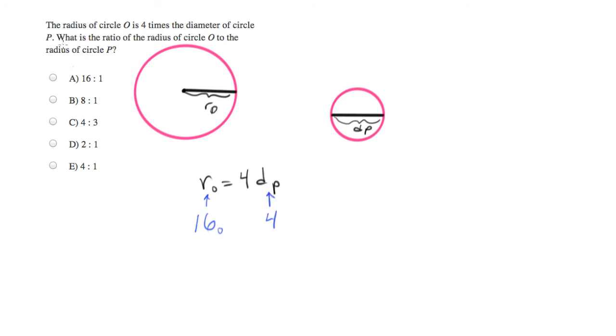And what have they asked us? They asked us, what is the ratio of the radius of circle O to the radius of circle P? So we want radius of O, they want it in ratio form, to the radius of P. And I'm going to write that as a fraction.